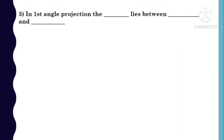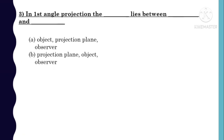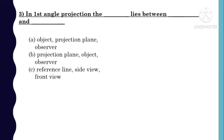Next MCQ: In first angle projection, which lies between which? Options are: A) object lies between projection plane and observer; B) projection plane lies between object and observer; C) reference line, side view, front view; D) reference line, left side view, right side view.